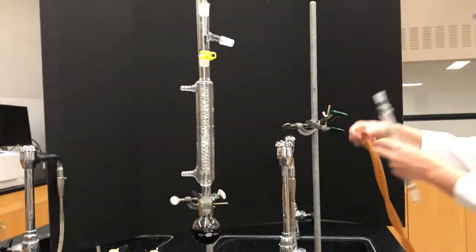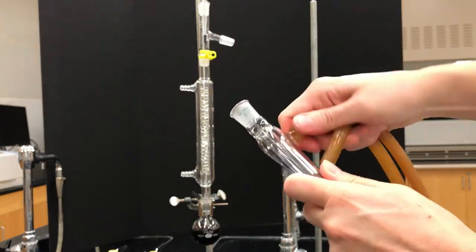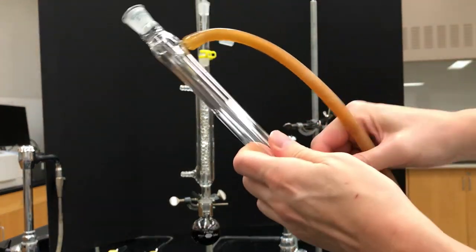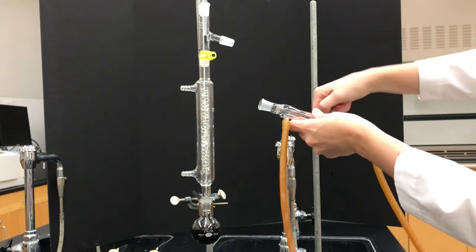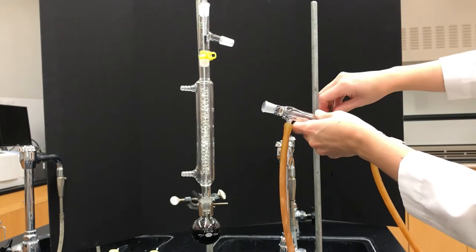Next is the condenser. And again, you want to wet the hoses with some water first so that they can twist on much more easily. And then the awkward part of trying to connect the condenser up to the three-way adapter.